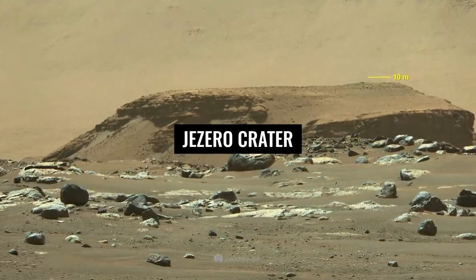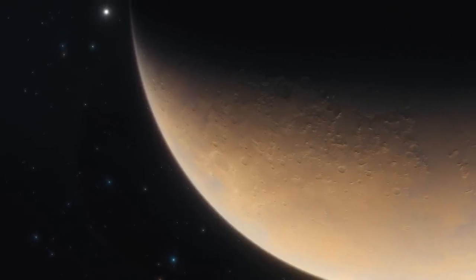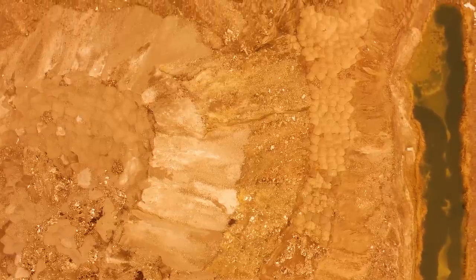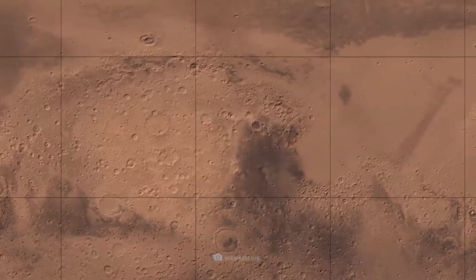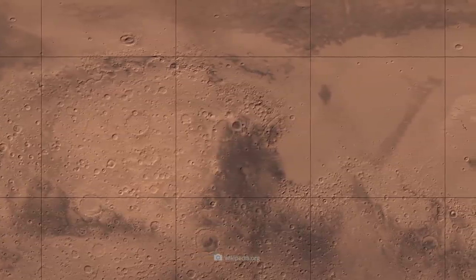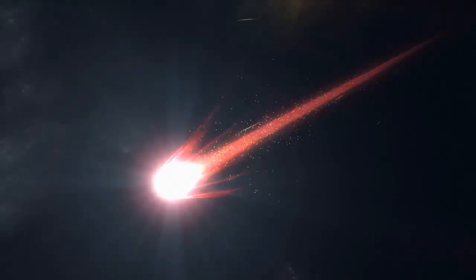Jezero Crater. Although it's only been in operation for a few months, Perseverance has already produced some amazing images of the Martian surface. The rover landed in the so-called Jezero Crater, which is located on the northern hemisphere of the celestial body on February 18th, 2021. This impact site resulted from a collision with a meteorite and has a diameter of almost 30 miles.